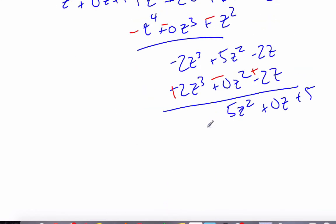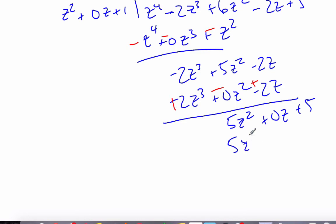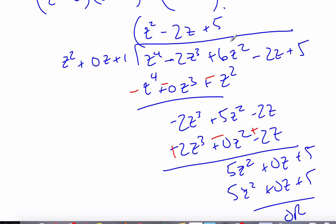And so when I multiply here, I get 5z squared plus 0z plus 5, which gives me a remainder of 0. And so this is my second factor of my quadratic: z squared minus 2z plus 5.